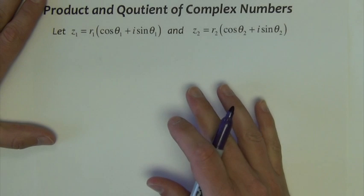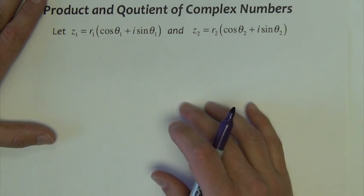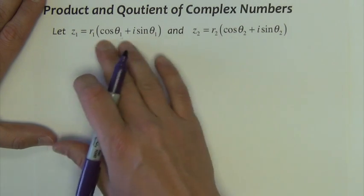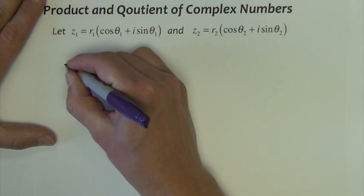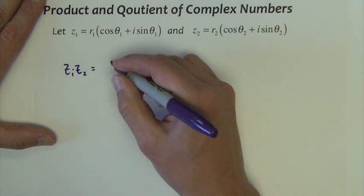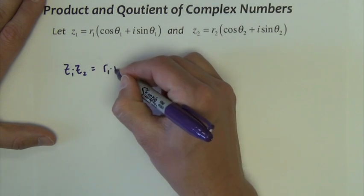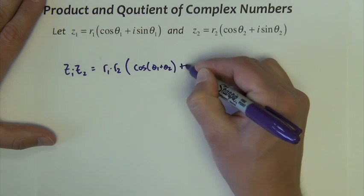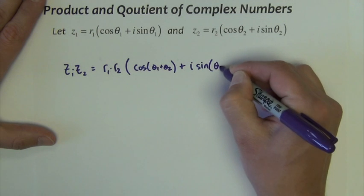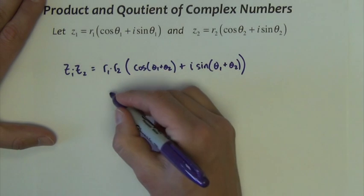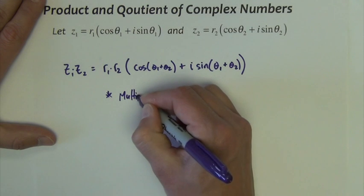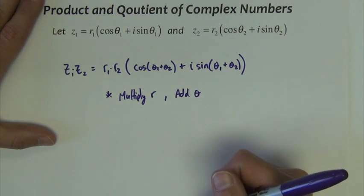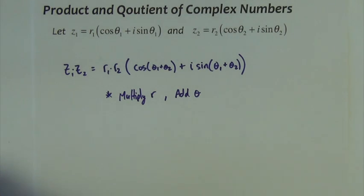Next, let's go over how to do the exact same thing we just did — multiply and divide complex numbers — but with numbers given in trigonometric form. Z1 is R cosine plus i sine theta, same thing for Z2. We can find Z1 times Z2 as R1 times R2 times cosine(theta1 + theta2) plus i sine(theta1 + theta2). Very simply, we multiply the R values and add the thetas. That's the process for multiplying two complex numbers in trig form.